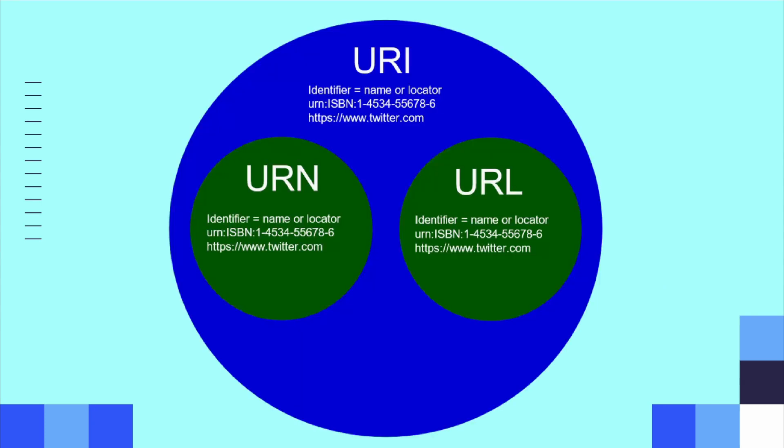The relationship between URI, URL, and URN can be best represented using a Venn diagram. Most of the time, confusion arises between URI and URL, as they are extremely similar, and most people do not understand that URL is just a subtype of URI.